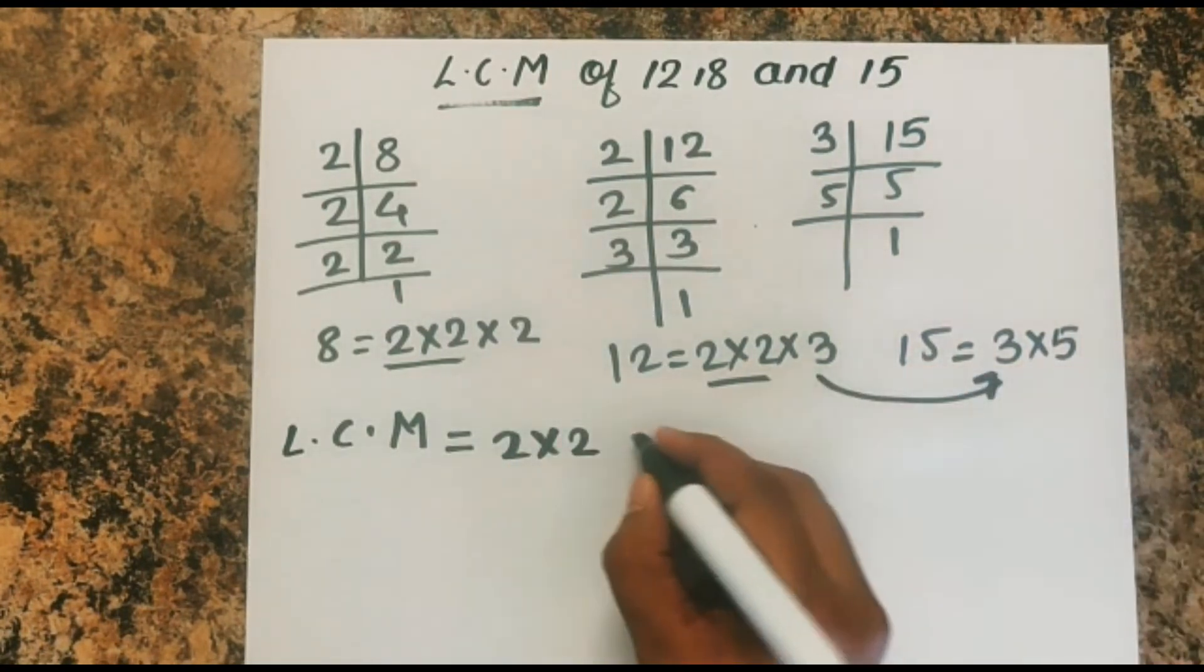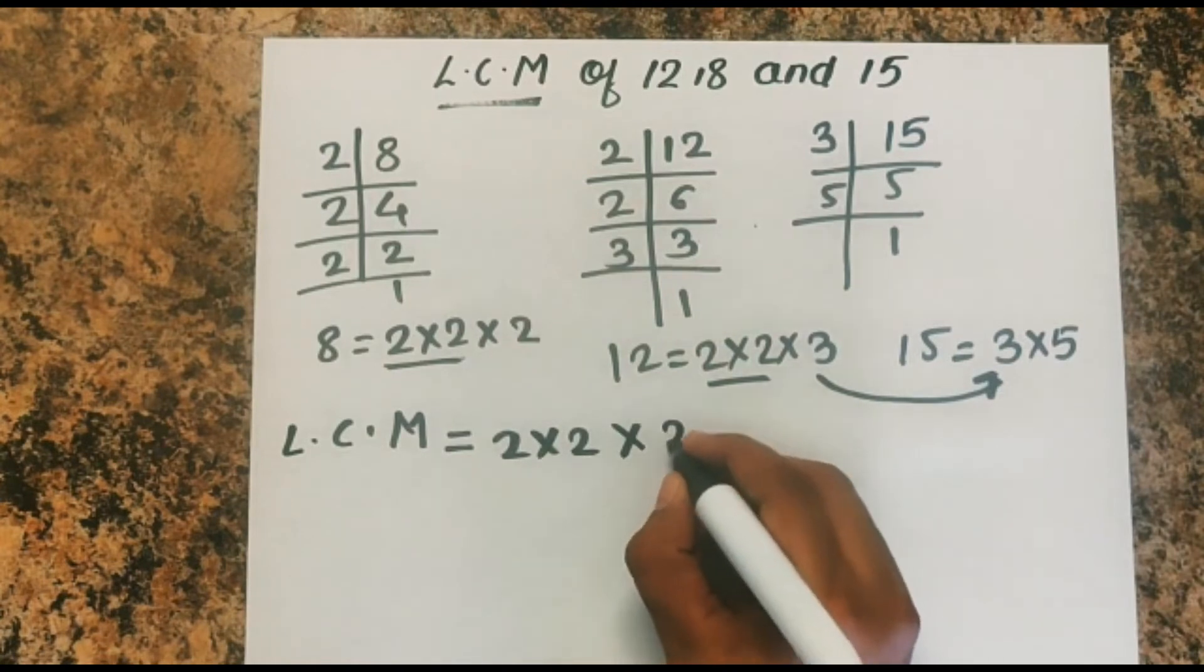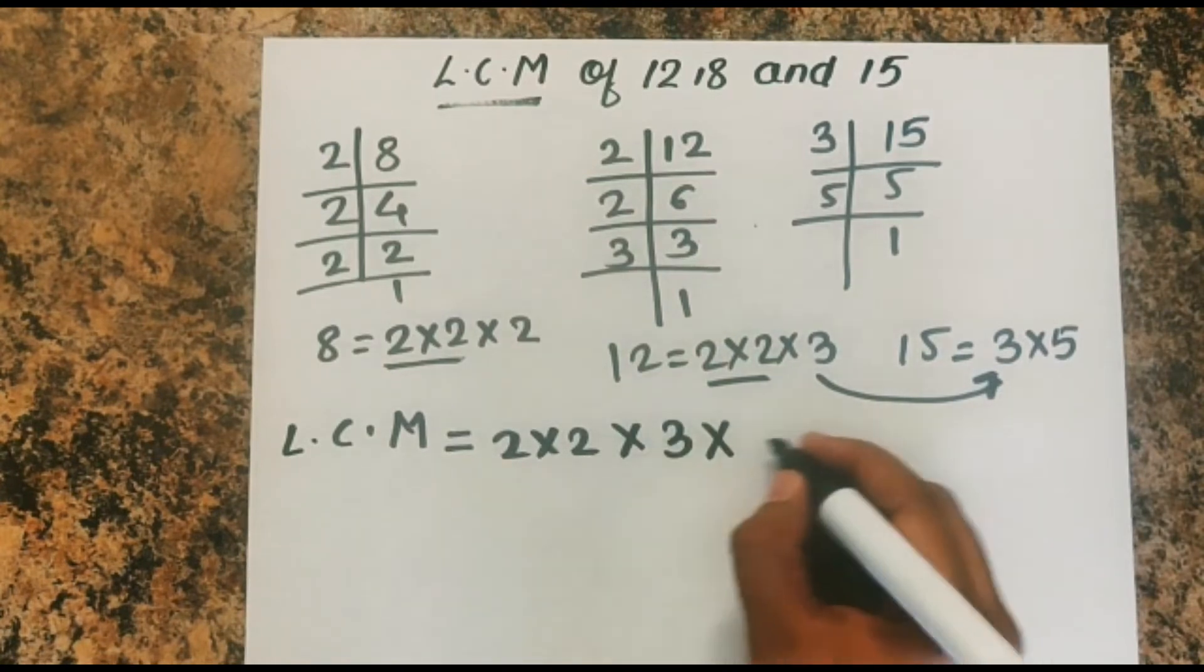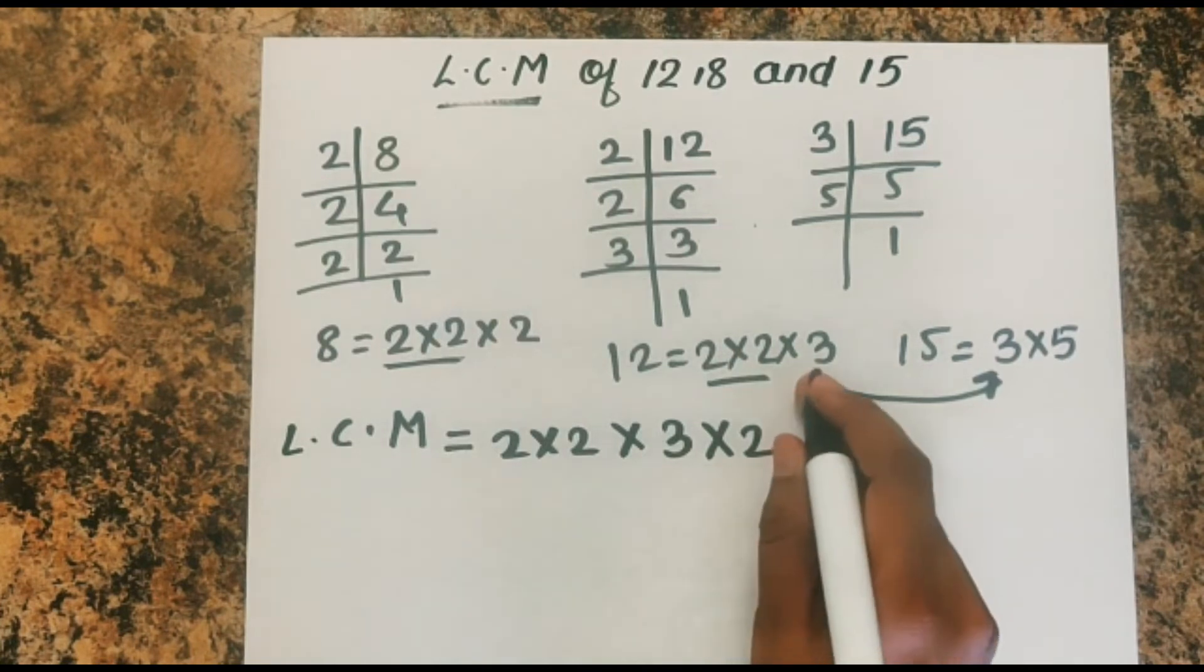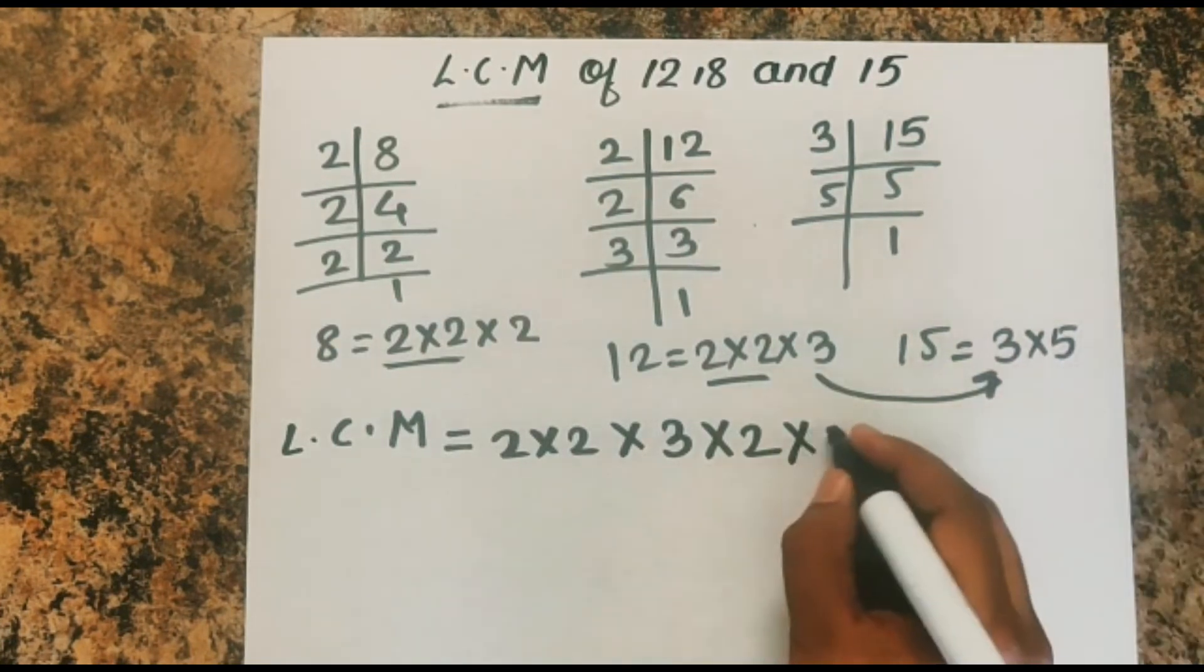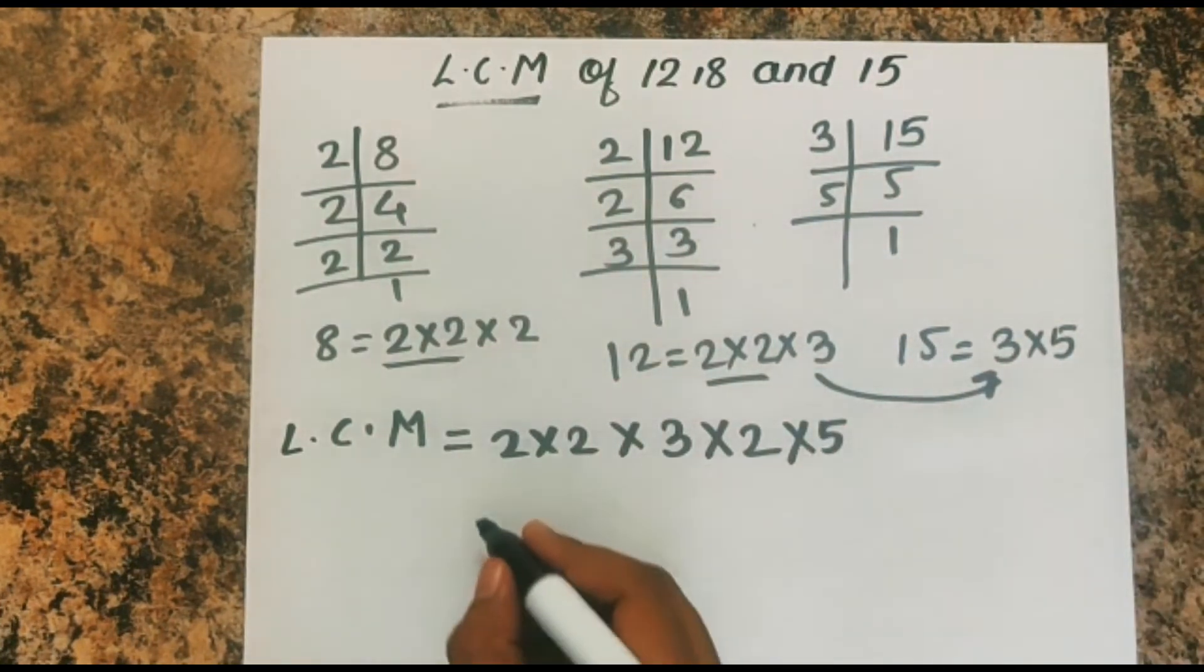Then 3 is common between 12 and 15. The uncommon factors are 2. There is nothing remaining in 12, and 5 is remaining in 15.